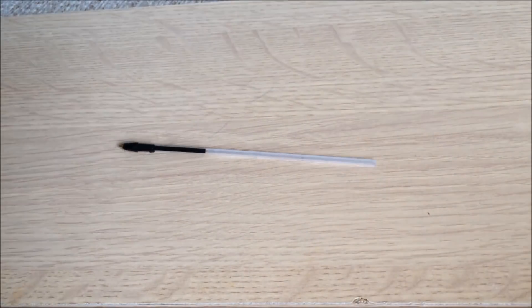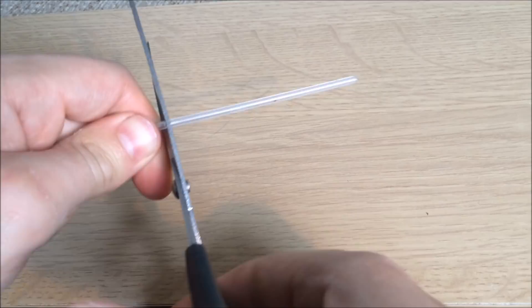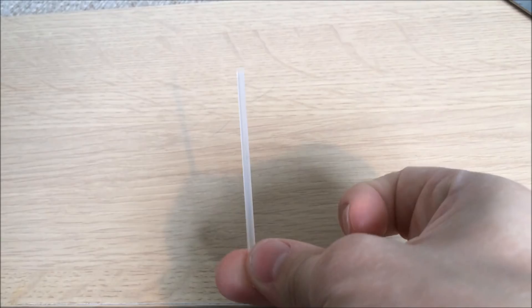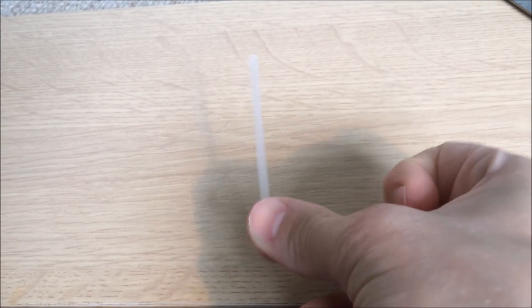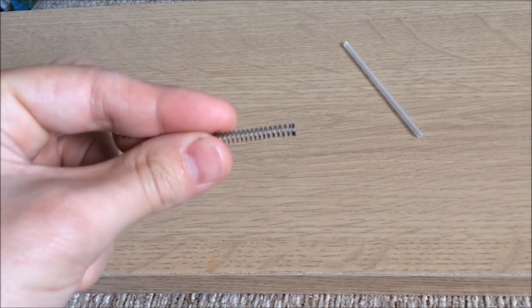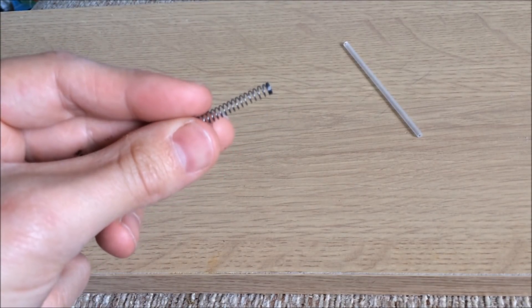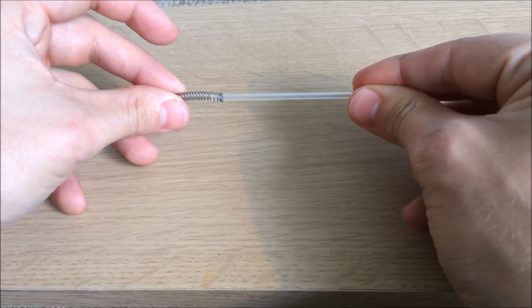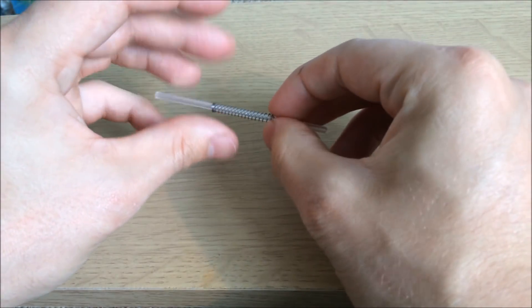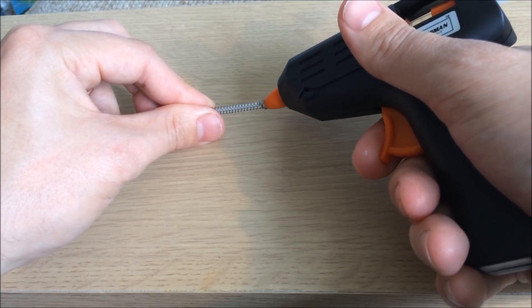The first thing you need to do is take apart a ballpoint pen and chop off a length of the inner refill tube. Next, use a spring from the inside of a clicker pen and place it over the refill tube, and then stick one end of the spring to the center using hot glue.